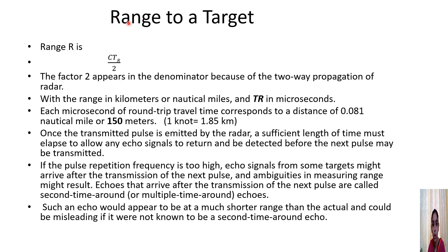The range or distance to a target is determined as speed multiplied by time. Here, speed is the speed of light C equal to 3×10⁸ meters per second, and the time factor TR is divided by 2 because of the two-way propagation of the radar signal. The range can be expressed in kilometers or nautical miles, and TR can be in microseconds.